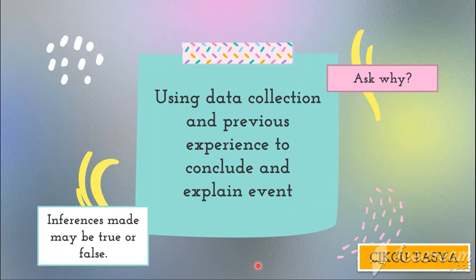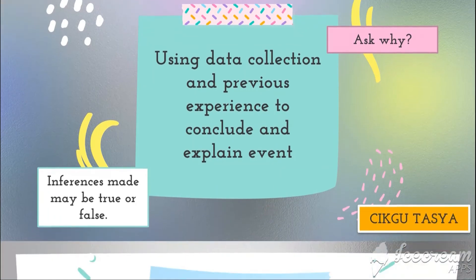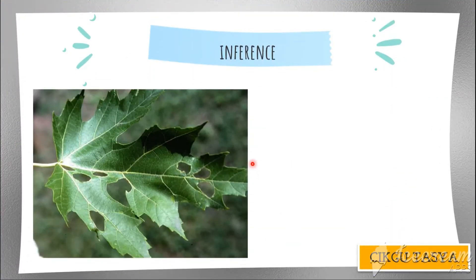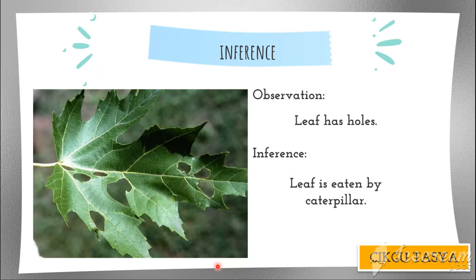Remember, inferences may be true or false — they do not always have to be true. We conduct experiments to justify the inference or hypothesis. For example, looking at a leaf: the observation is that the leaf has holes. To make an inference, ask why. One answer may be that the leaf was eaten by a caterpillar — that is why it has holes. You can think of other answers too.